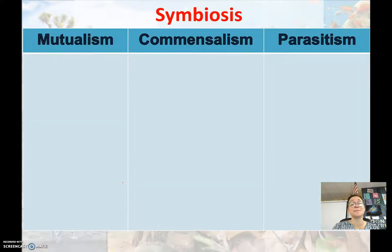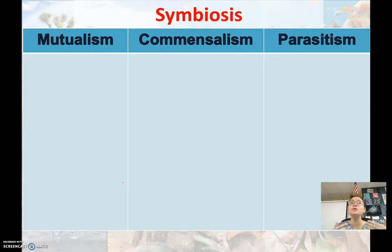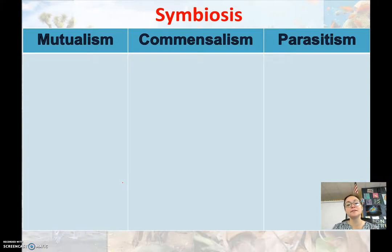There's another type of interaction called symbiosis. Symbiosis is when you have a close interaction between two different species whose livelihoods are very intertwined. There are three types of symbiosis, or living closely together: mutualism, commensalism, and parasitism.